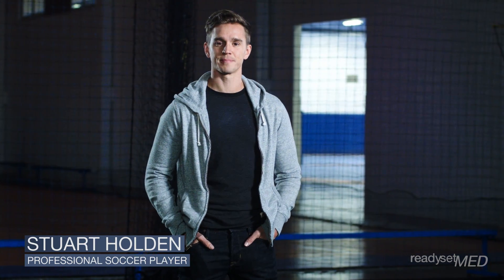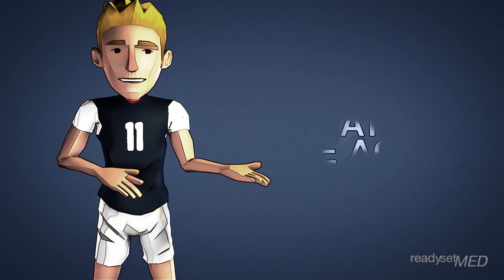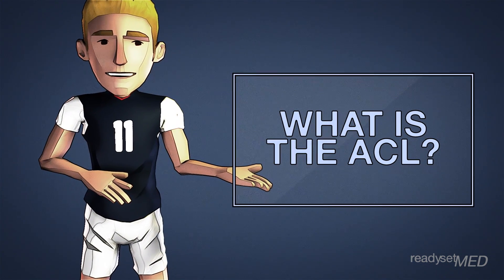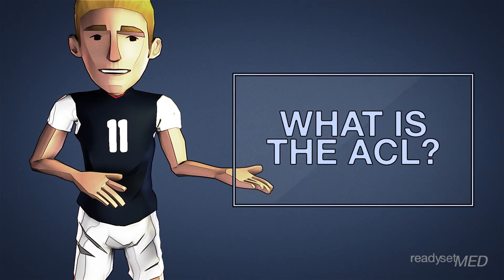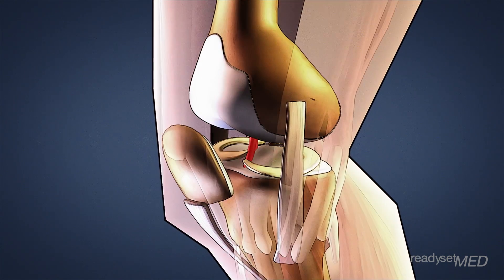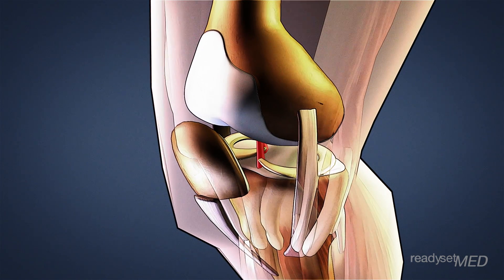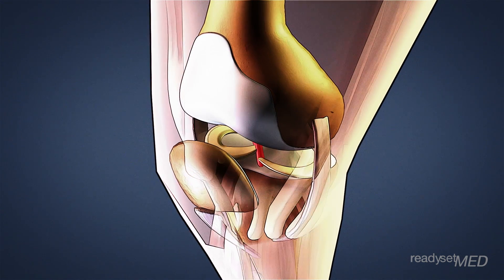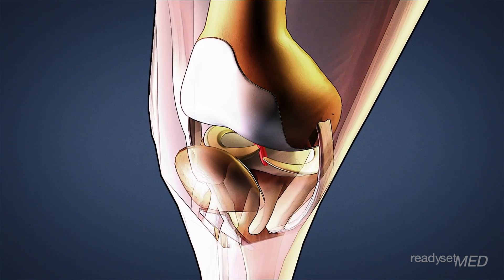The ACL is important in so many athletic movements. For some examples, let's go to pro soccer player Stuart Holden. Now let's break down how the ACL functions as we play the games we love. If you missed our video introducing the ACL, click here for some basic info. Otherwise, you already know that it helps to stabilize the knee in both forward and backward translation and rotation.